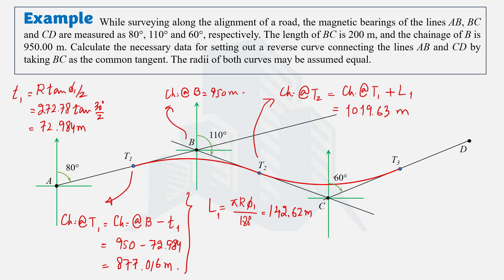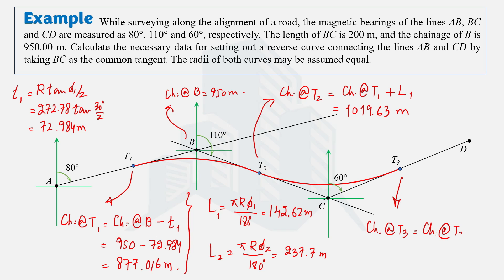For the chainage at T3, we calculate the length of the second curve using the same formula but with Δ2 = 50°. This gives a length of 237.7 meters. Therefore, chainage at T3 = chainage at T2 + length of second curve = 1019.63 + 237.7 = 1257.33 meters.